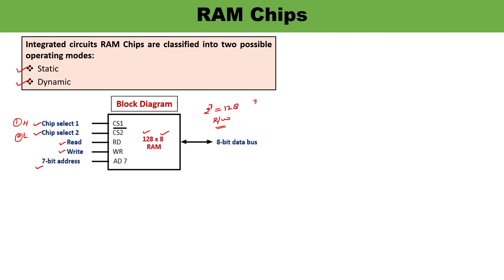Three-state buffers have three states: logic 1, logic 0, or the high impedance state. The output generated by three-state buffers can be placed in one of these possible states — either active high, active low, or high impedance state.